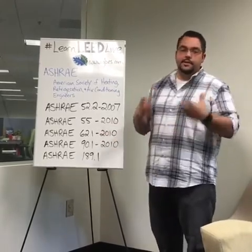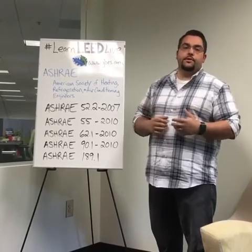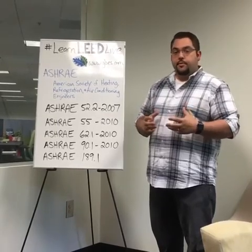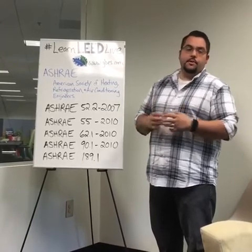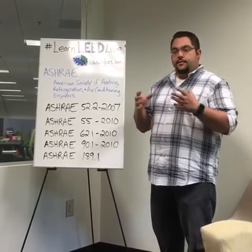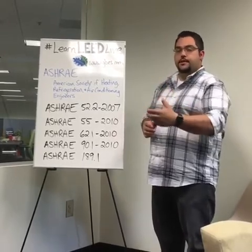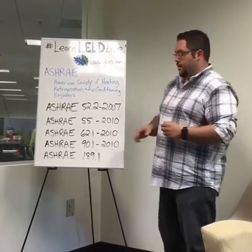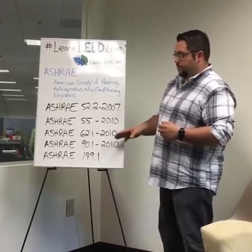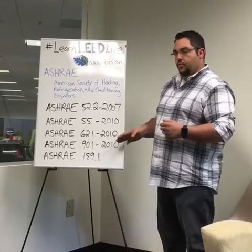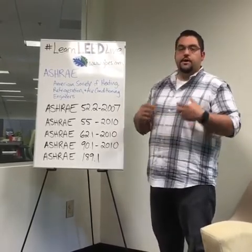ASHRAE 90.1 — this is the big one. This is where we get the most points on a LEED for new construction project. ASHRAE 90.1 is building performance; think energy code. In most parts of the United States we have to follow the ASHRAE 90.1 standard. LEED wants us to do better by a certain percent than that standard. ASHRAE 90.1-2010 is a version some jurisdictions are starting to adopt, and LEED is going to force us into that more stringent version of energy code.